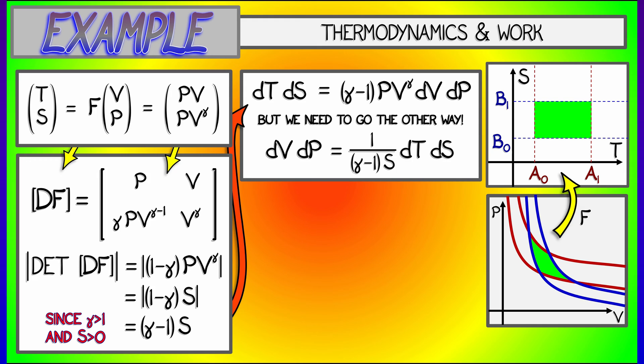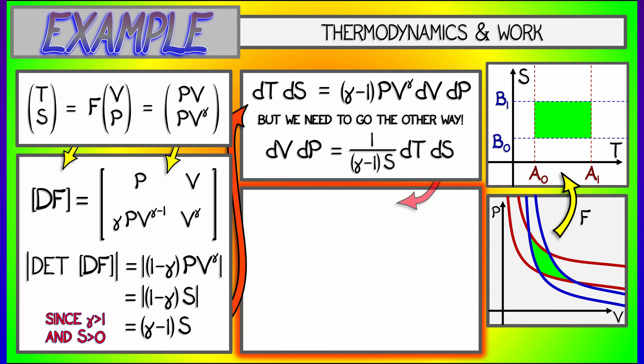I'm going to solve for DVDP, that area element, as DTDS divided by gamma minus 1 times S. That's going to allow me to compute area in the PV plane really easily. So, setting up the work as the area of this region, as the double integral of the area element, DVDP, I get the integral of DTDS divided by gamma minus 1 times S.